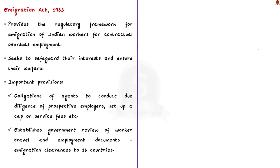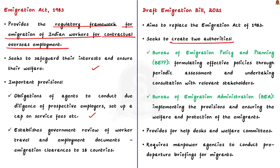First of all remember that this draft bill is proposed to replace the immigration act of 1983. This act provides the regulatory framework for immigration of Indian workers for contractual overseas employment and mainly seeks to safeguard their interests and ensure their welfare. The 1983 act outlines the obligations for agents to conduct due diligence of prospective employers and sets up a cap on service fees. It also establishes government review of worker travel and employment documents through immigration clearances to 18 countries, mainly available for West Asian and Southeast Asian countries.